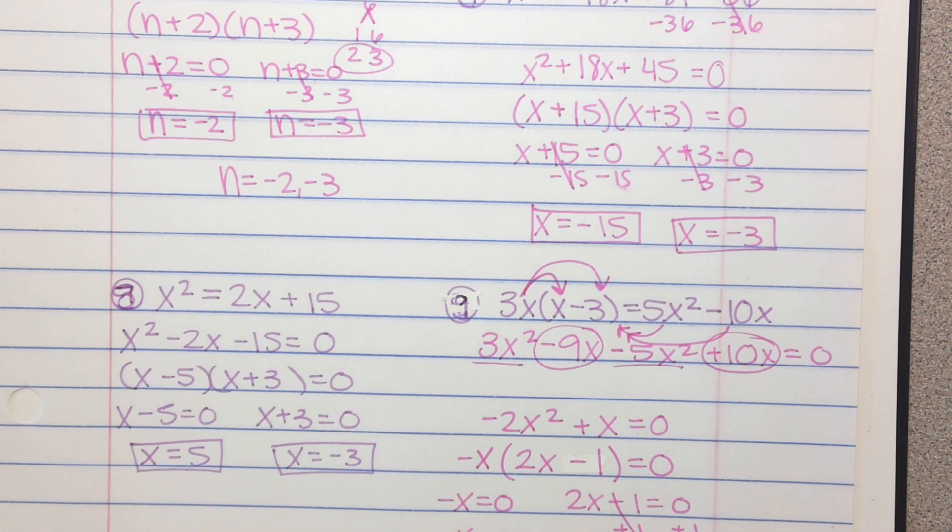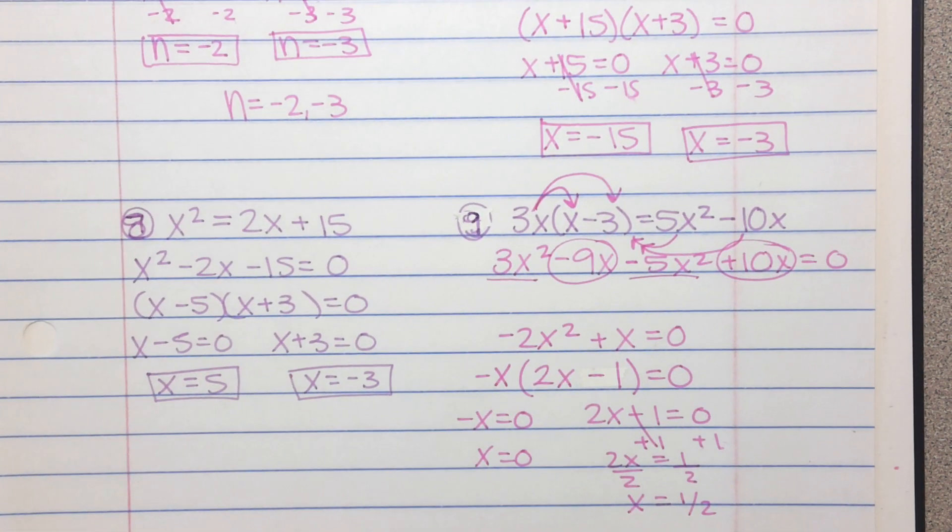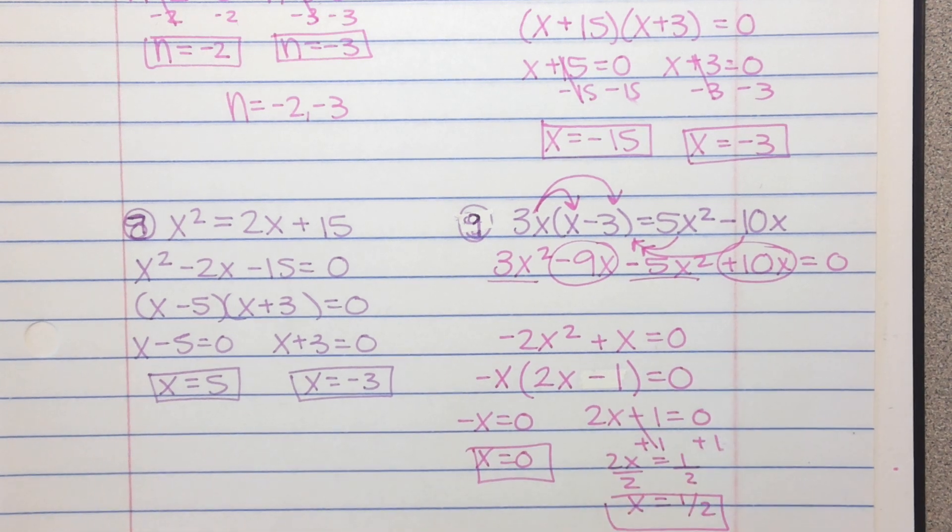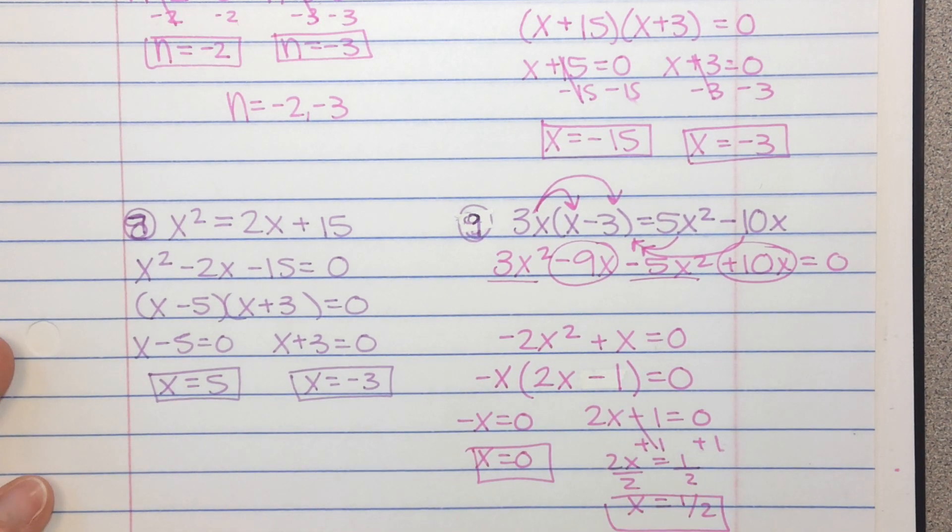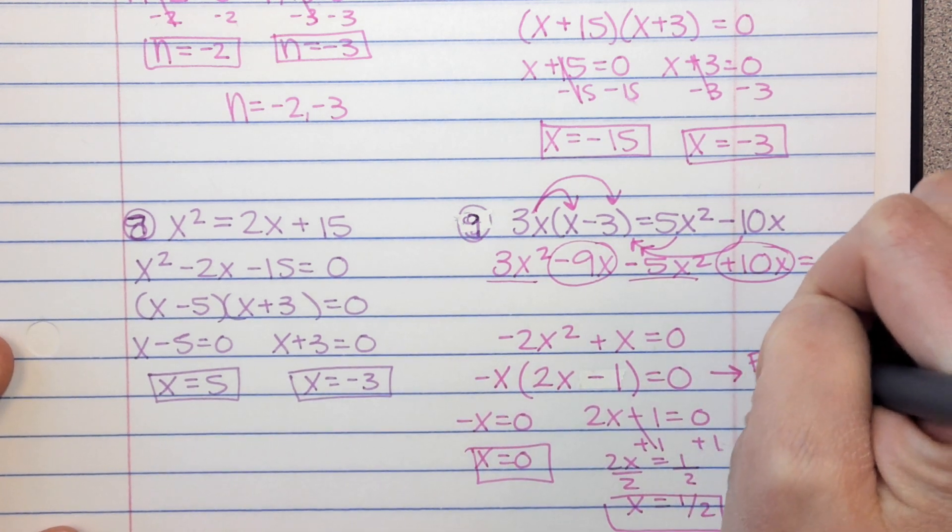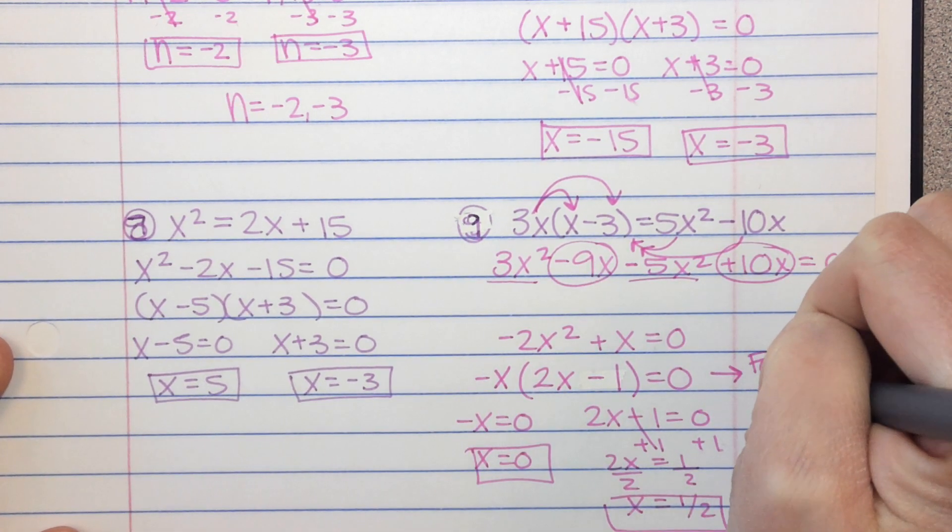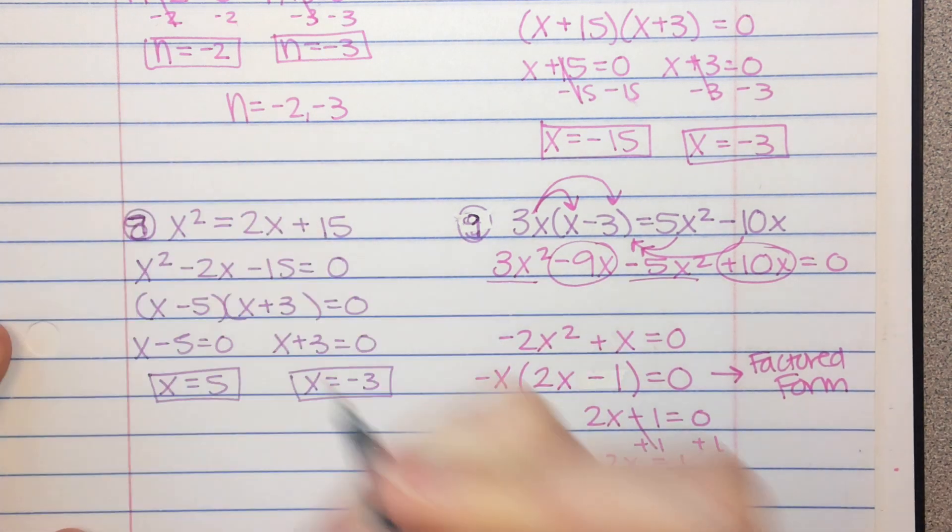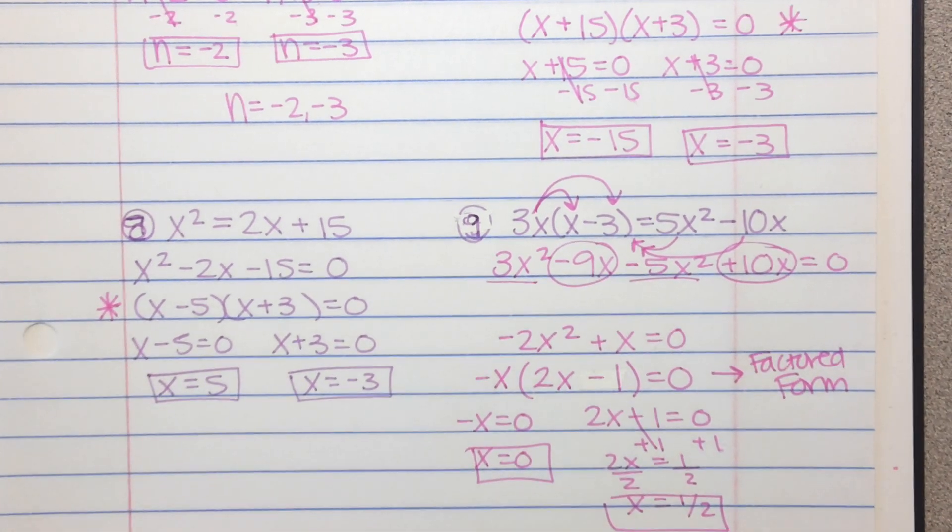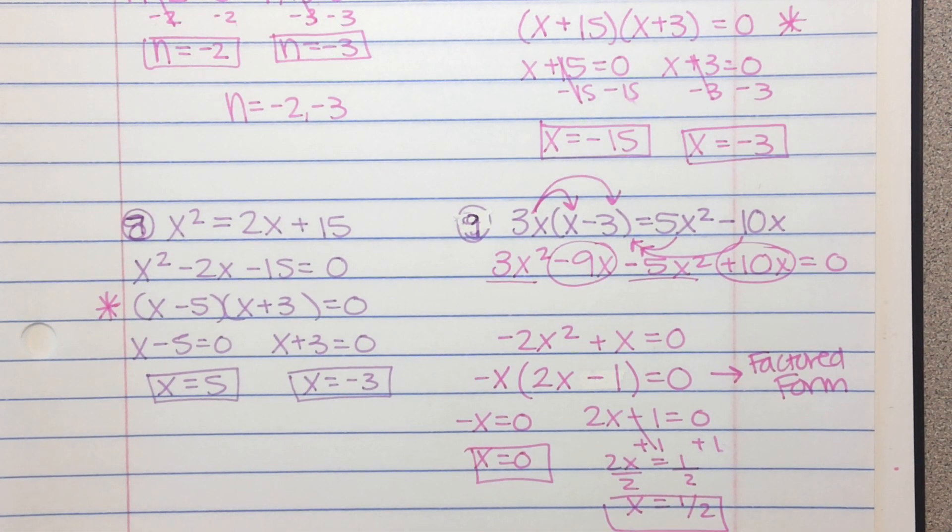Now, some of your problems in Math Excel are going to ask you for just the factored form. I guess I should box these in. So if it asks you for factored form, this is what it wants. So you can make a little note. This is factored form. This is factored form. This is factored form. So that last step before you break it apart and set it equal to 0 is the factored form.